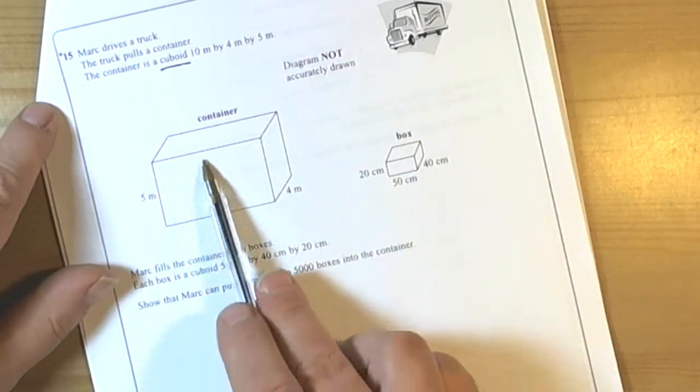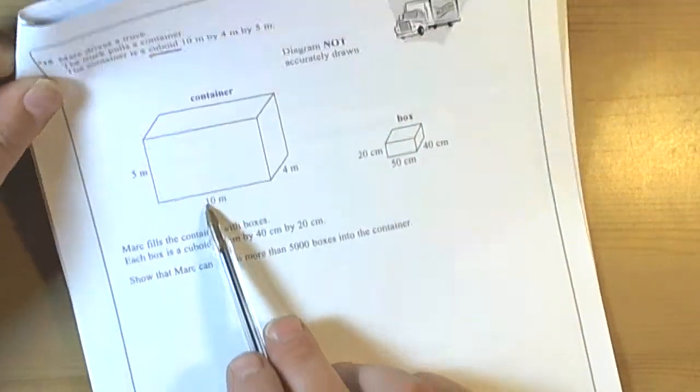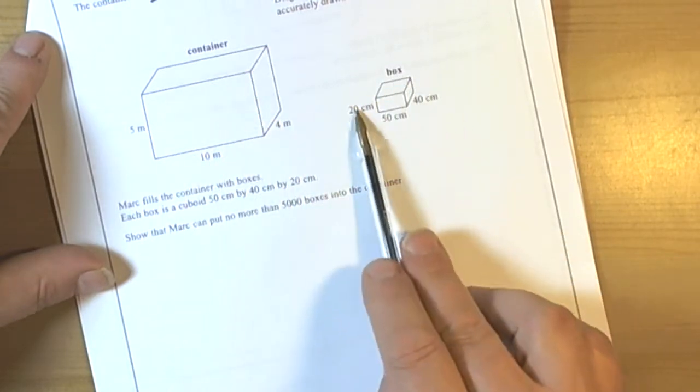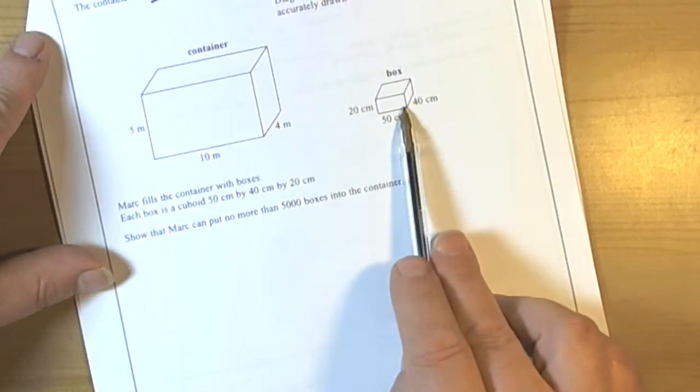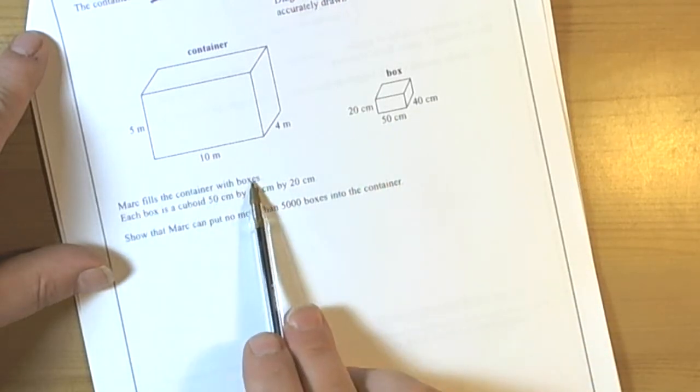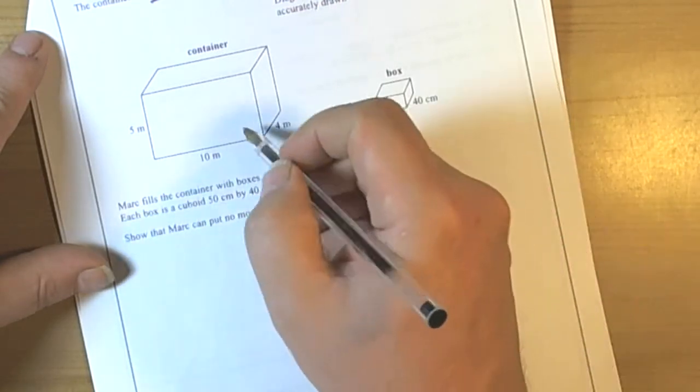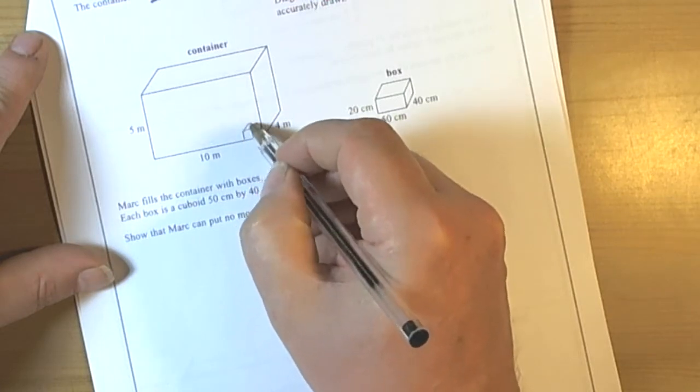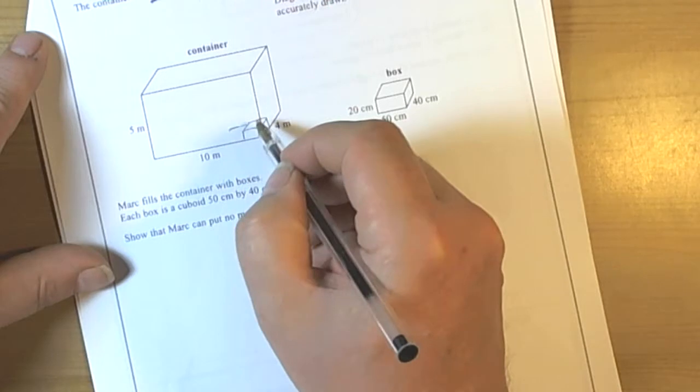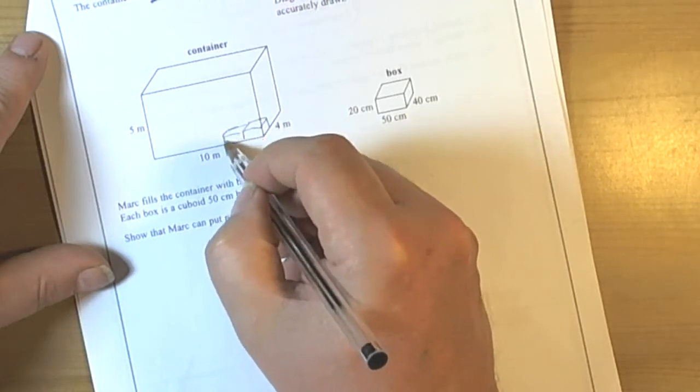Looking at the rest of the question, we can see we've got a container of a cuboid shape and some boxes of certain dimensions which they want to fill the container with. So literally we're trying to look at how many of these boxes are going to fit into this container.